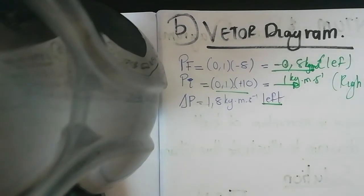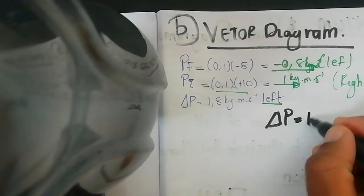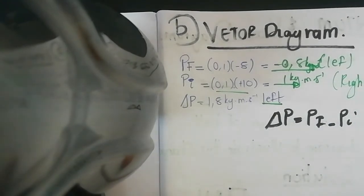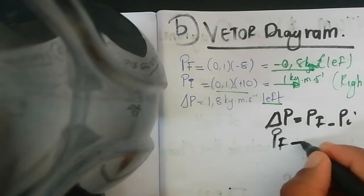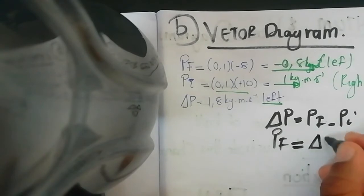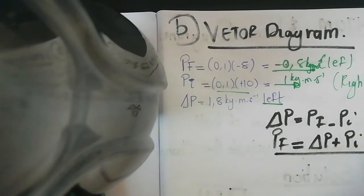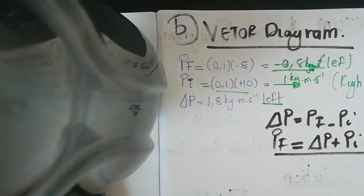Recall the formula: change in p equals p-final minus p-initial. Rearranging gives: p-final equals change in p plus p-initial. Take time to understand this rearranged formula, as it tells you how to draw the vector diagram.